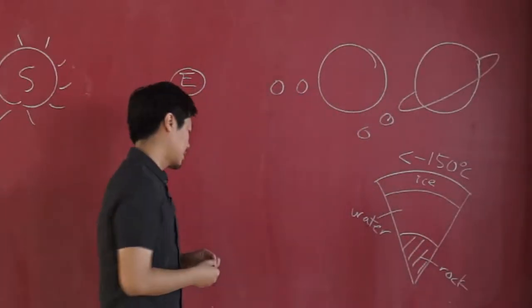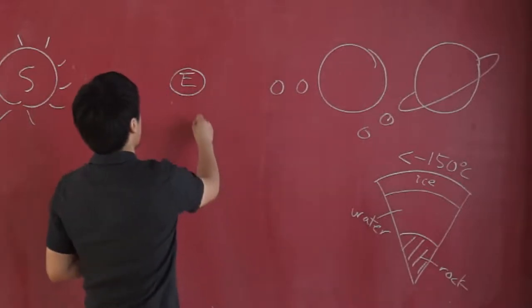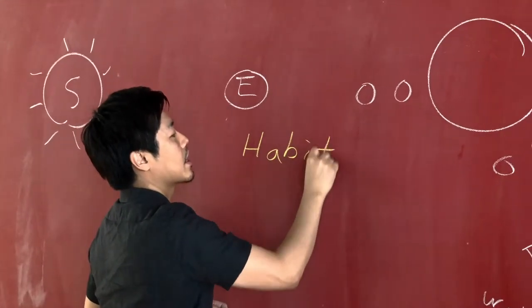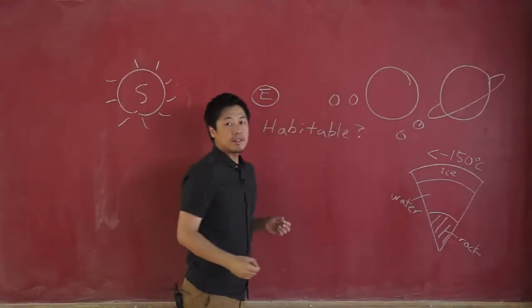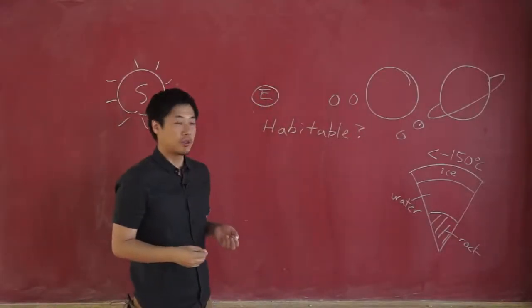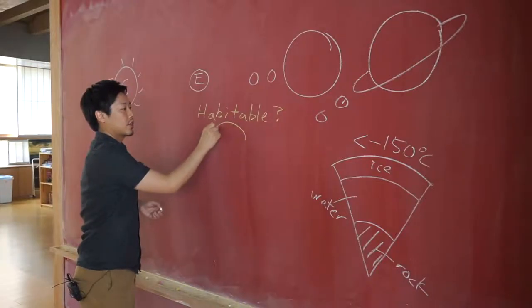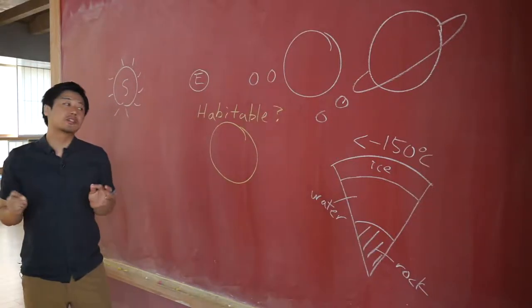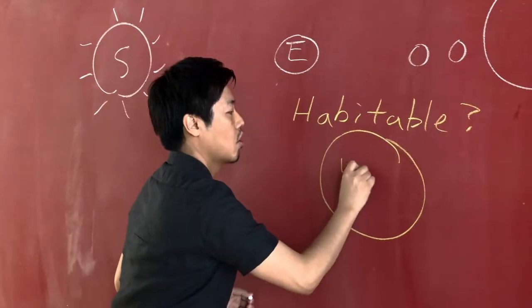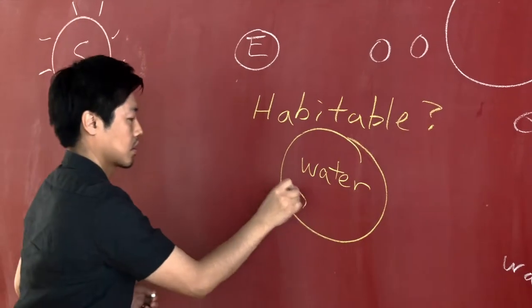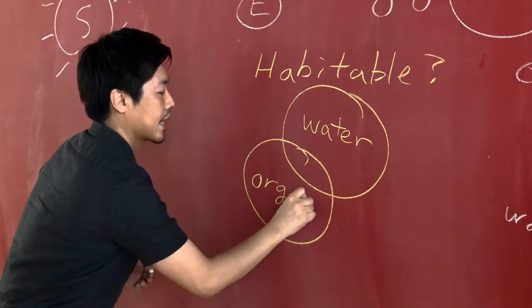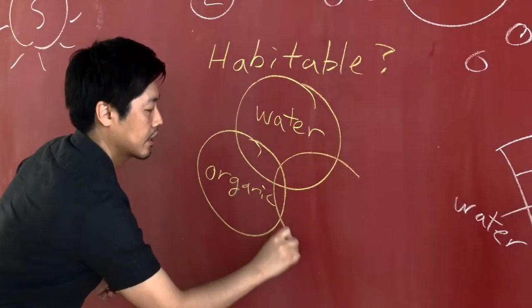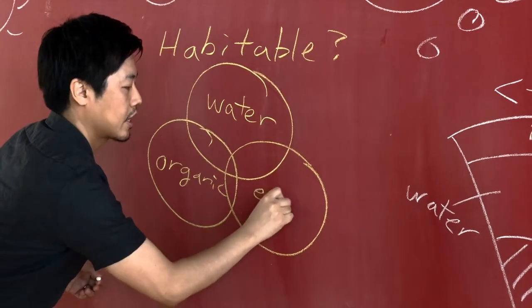So the question is, are they habitable? Well, this is a really challenging question. The ingredients for life, ingredients for Earth life, are water, organics, and energy.